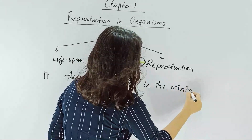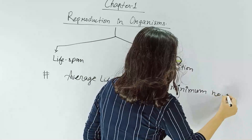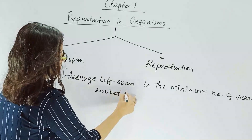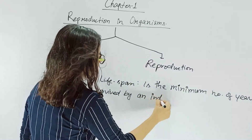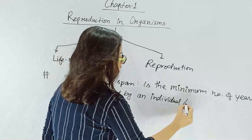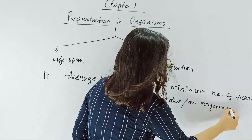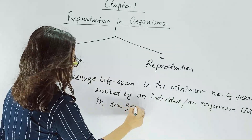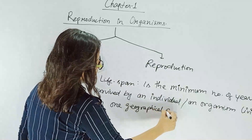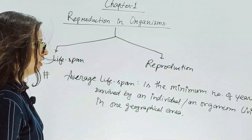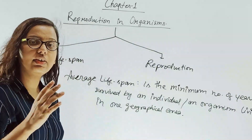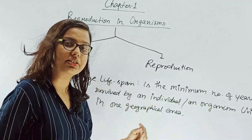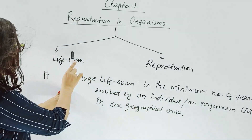The definition of average life span is: the minimum number of years survived by an individual or organism living in one geographical area. For example, the average life span of human species living in India is 64 to 65 years, while for Japan it is approximately 100 years, because people in Japan live longer than Indians. This was the second term associated with life span — average life span.